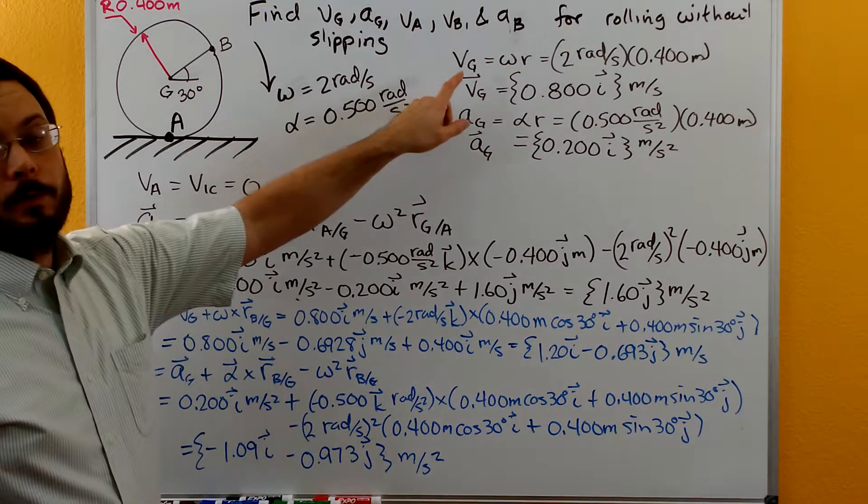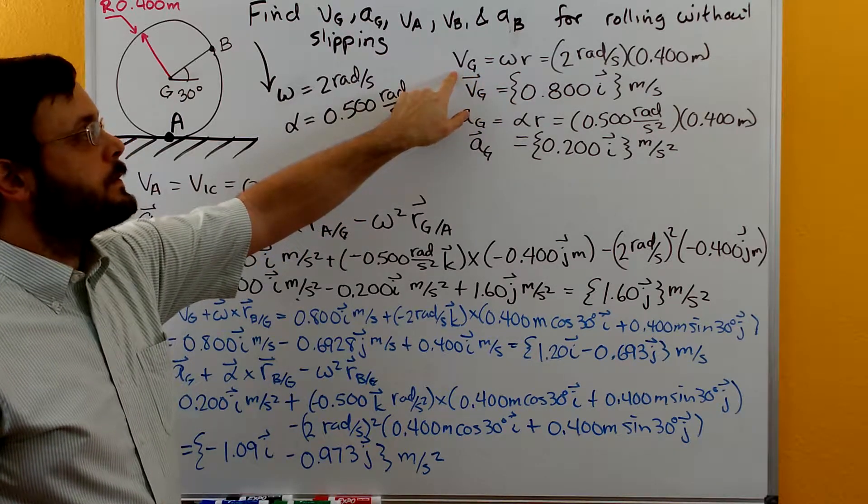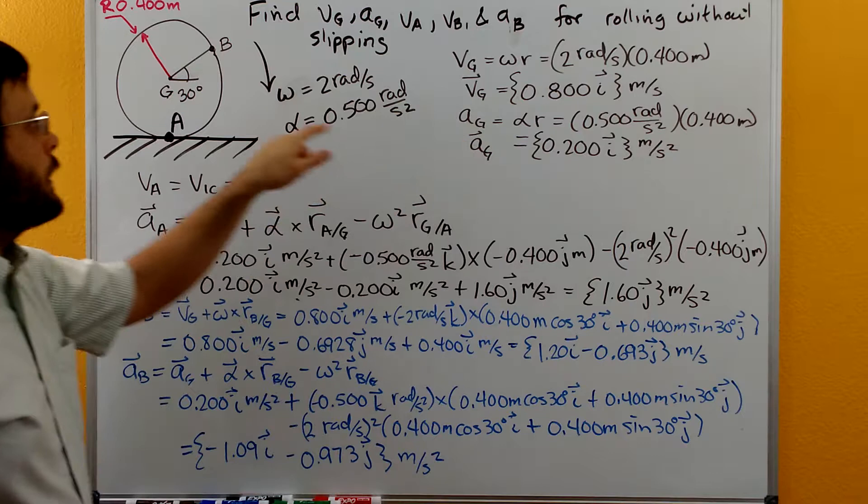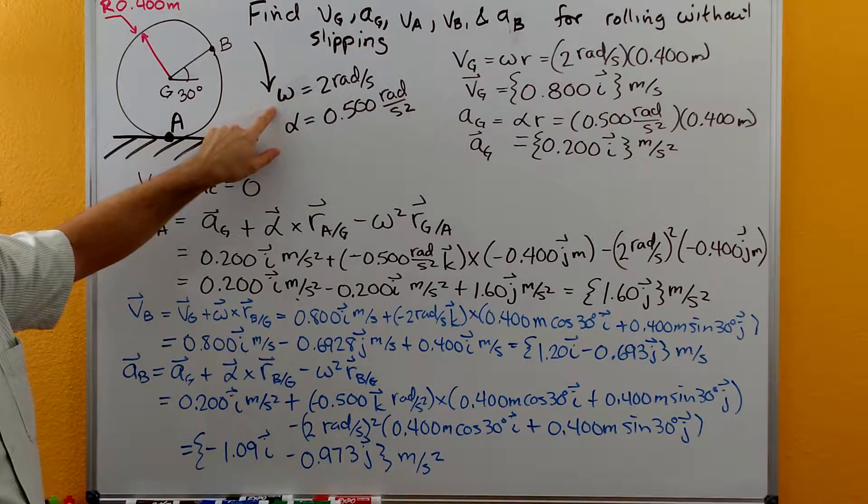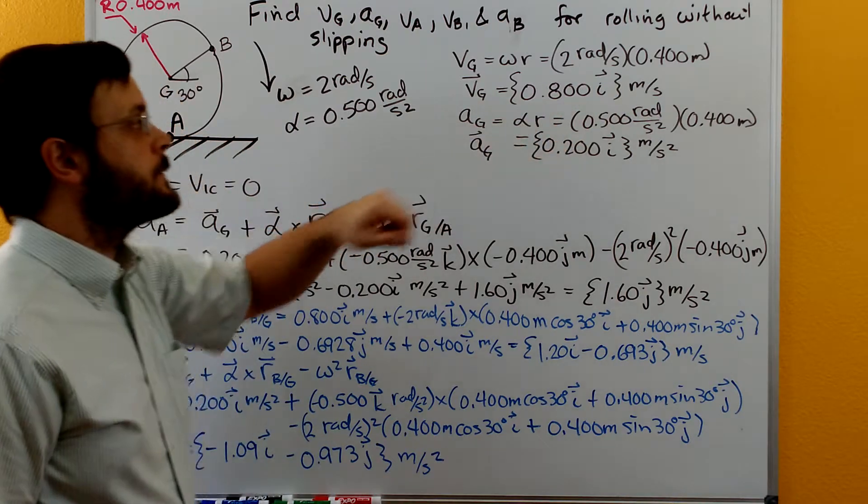Because it's rolling without slipping we can go ahead and just apply the rolling without slipping formulas. So the velocity at G is equal to omega. Our omega in this case was 2 radians per second times the radius of 0.4. That gives us 0.8.